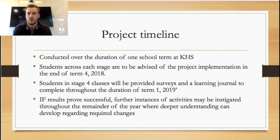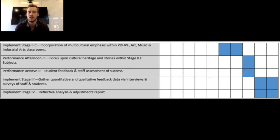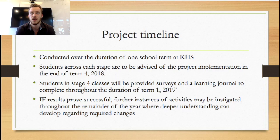Students will be provided with the basis of the program at the start of the next term. From Week 1 of Term 1 2019, students across all Stage 4 classes will begin incorporating greater instances of multicultural understanding in class. At regular fortnightly intervals, students will participate in cultural performance afternoons across key learning areas, with feedback and performance reviews conducted to gain insight into the program's success. In the final three weeks of Term 1, quantitative and qualitative data will be gathered and formed into a reflective analysis and adjustments report, shared amongst faculty members with opportunity for reflection at a whole school level. If successful, further incorporation at Stage 5 and 6 levels can begin from Term 2 and Term 3.